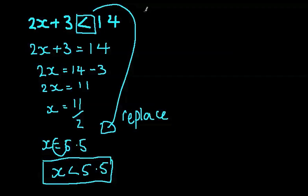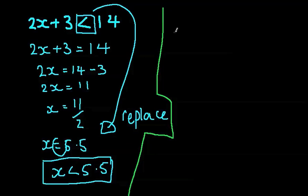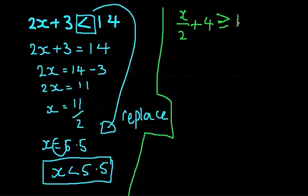So I'm just going to go through another one. Let's go through a bit of a complicated one now. Let's say we have x over 2 plus 4, so it's greater than or equal to 13.